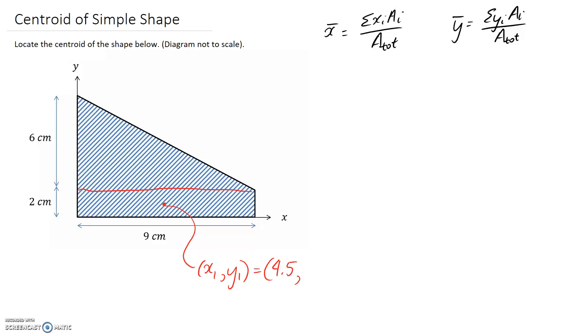And halfway up is going to be half of 2, which is 1. So this point here sits 4.5 across and 1 up.